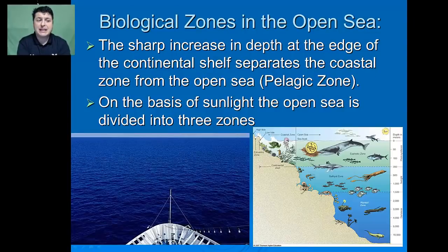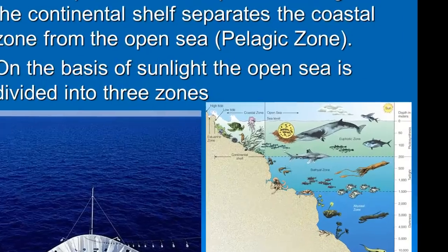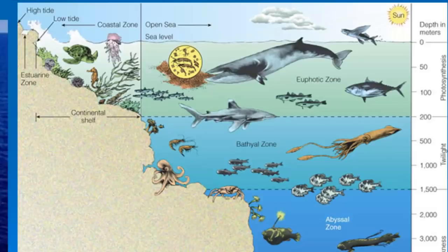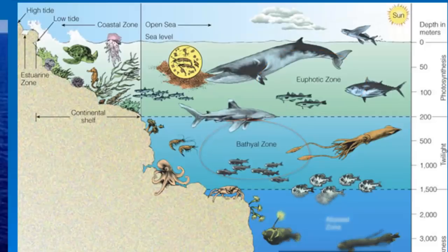As we leave the coast and head into the open ocean, we see a sharp increase in depth at the edge of the continental shelf. It is here that we separate the coastal zone from the open ocean, also called the pelagic zone. On the basis of sunlight, the open sea is divided into three zones: the euphotic zone, the bathyal zone, and the abyssal zone.